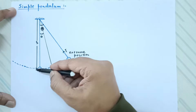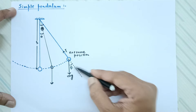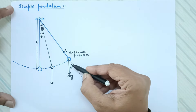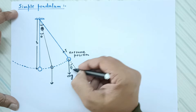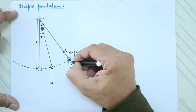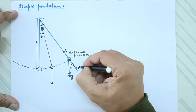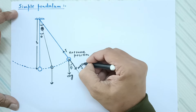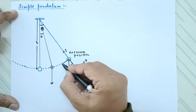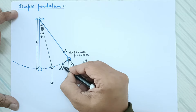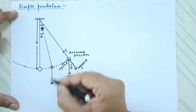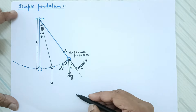You can see two parallel lines with the string as the transversal, giving corresponding angles. So if I resolve mg into two components: the component along the string is mg cos theta, and the perpendicular component is mg sin theta.